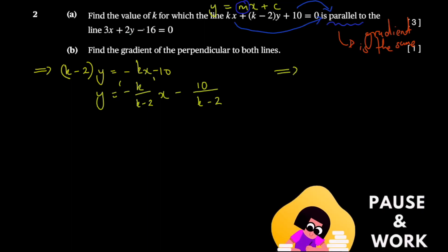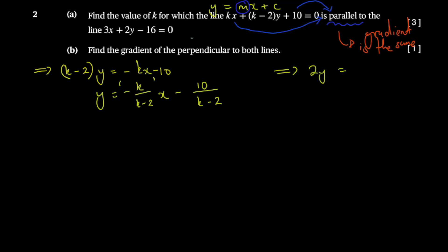This one would be 2y = -3x + 16. I'm going to divide throughout by 2, so I get y = -3/2 × x + 8 like this.